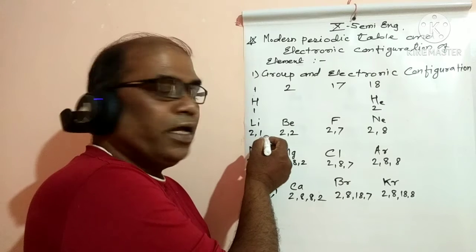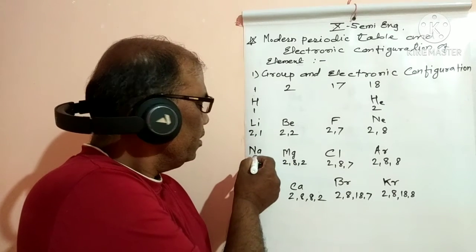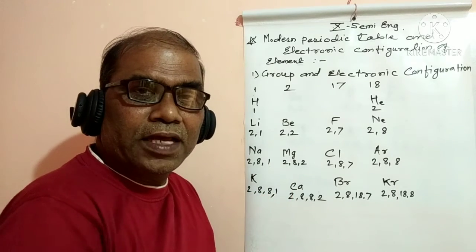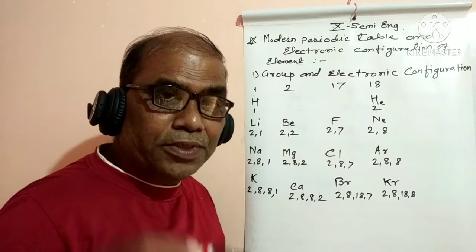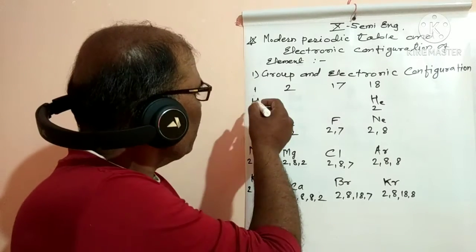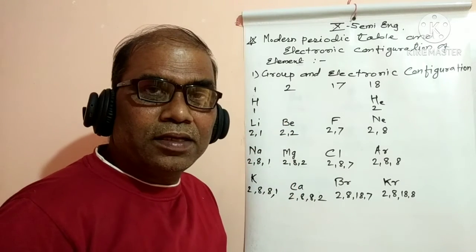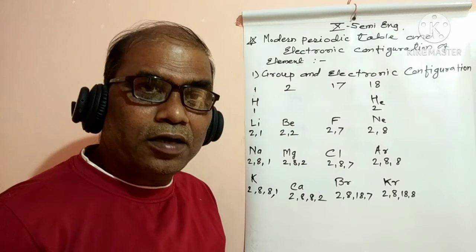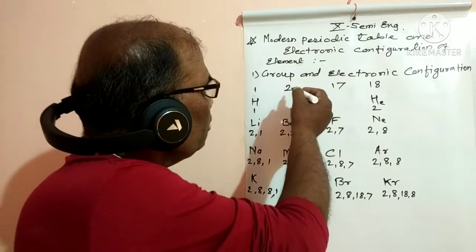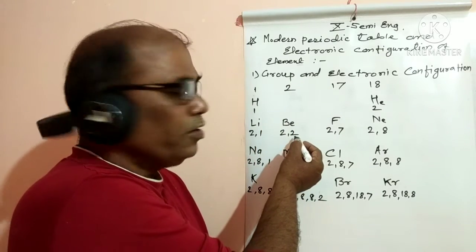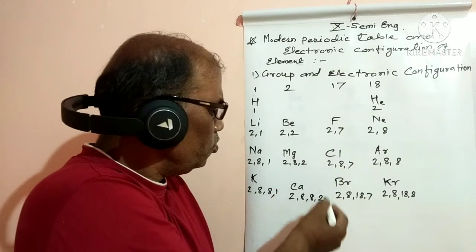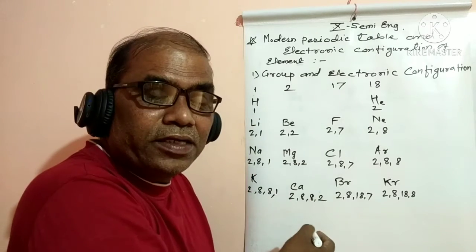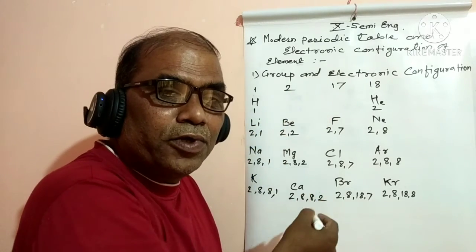What is the valence electron? The valence electron is the electron present in the outermost shell. The electrons present in the outermost shell are called valence electrons. For the second group, elements have two valence electrons in their electronic configuration.